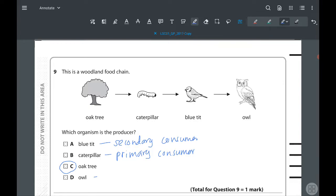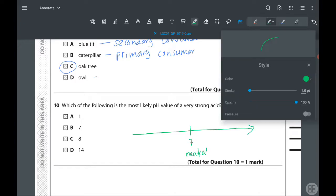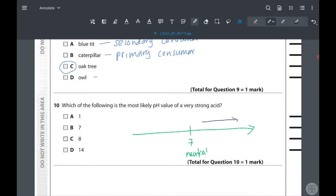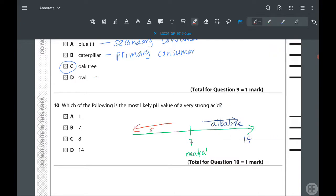Next: which of the following is the most likely pH value of a very strong acid? When we look at the pH scale, the middle is 7, that is neutral. Towards 14 is alkaline, and as it goes towards 14 the alkalinity increases. On the other side, acidity increases. This side can be 1 or 0. As the value decreases, acidity increases. So our answer will be A, which is pH 1.